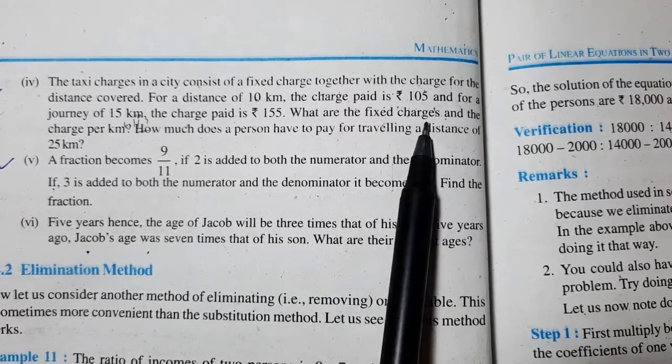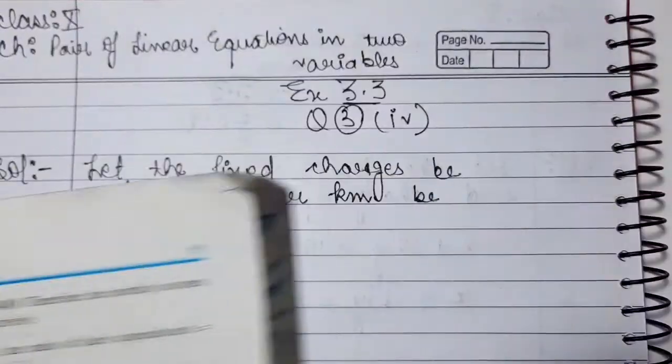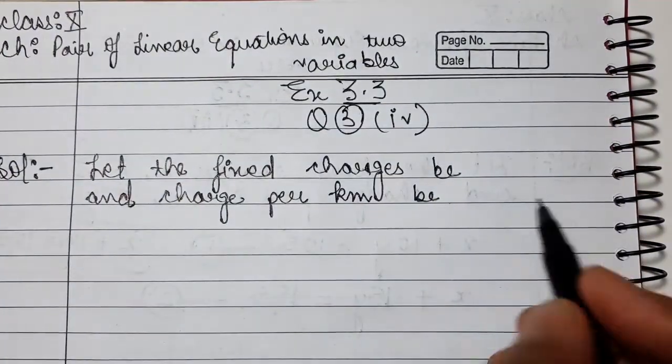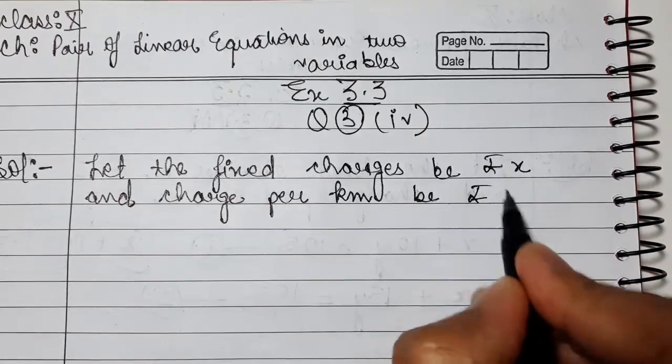What we need to find out, we let that as variables. Let the fixed charges be Rs. x and charge per km be Rs. y.